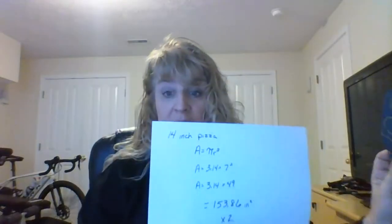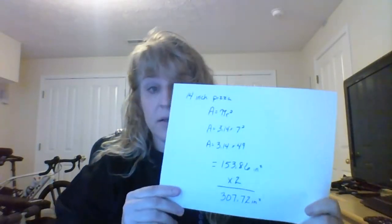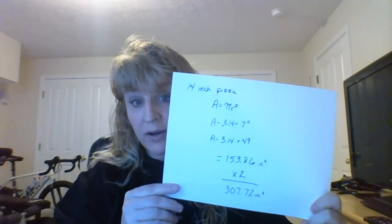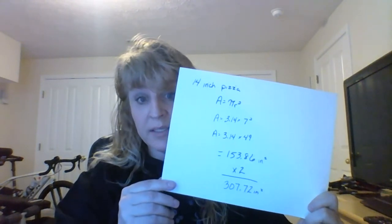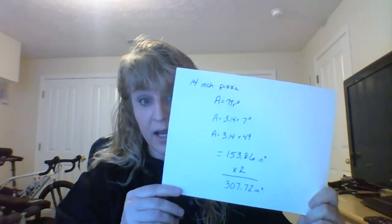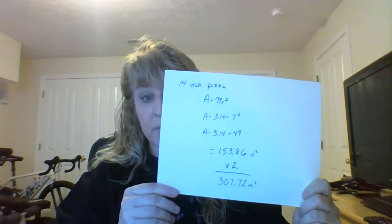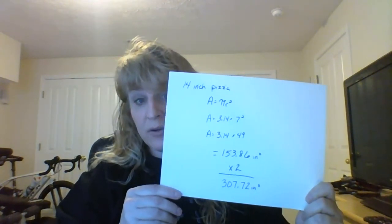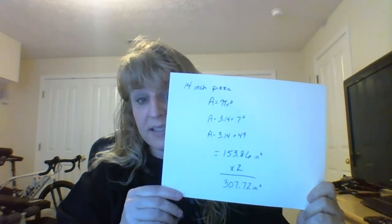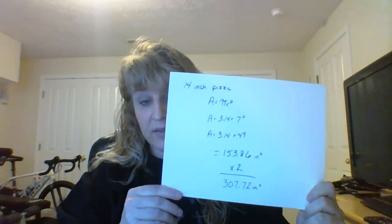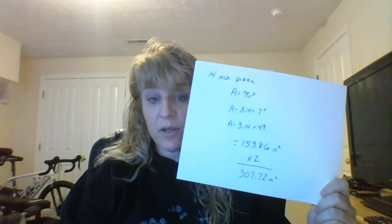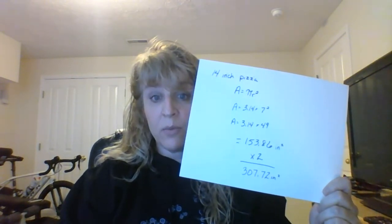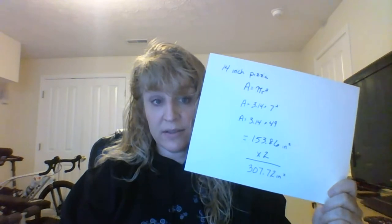One 14-inch pizza: area equals pi r squared, so 3.14 times 7 squared. 7 times 7 is 49, so 3.14 times 49 is 153.86 square inches. Now we want two of those pizzas, so that gives us 307.72 square inches.